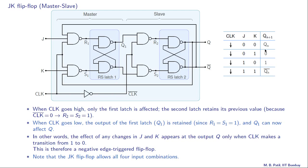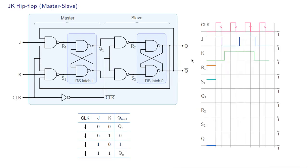Looking at the truth table: if J and K are both zero, Qn+1 equals Qn. If J and K are both one, Qn+1 equals Qn-bar, meaning the inverse of what it was. If J is zero and K is one, Qn+1 becomes zero independent of its past value. If J is one and K is zero, Qn+1 becomes one irrespective of its past value. Note that the JK flip flop allows all four input combinations—something that was not possible with the RS flip flop.